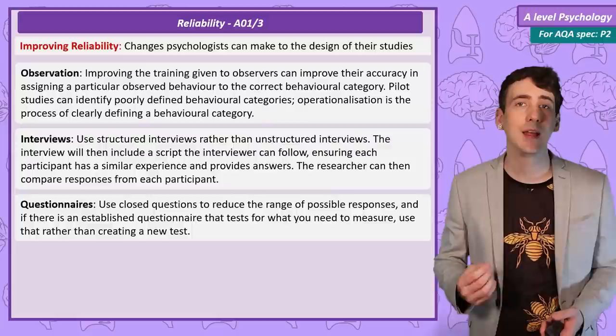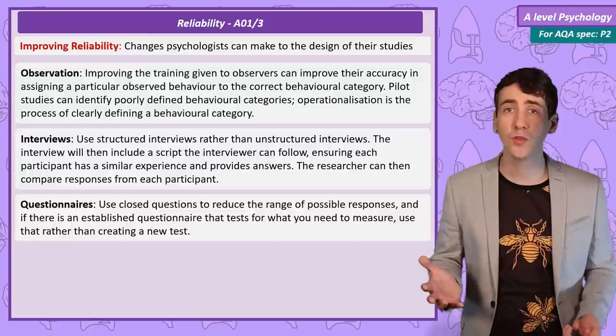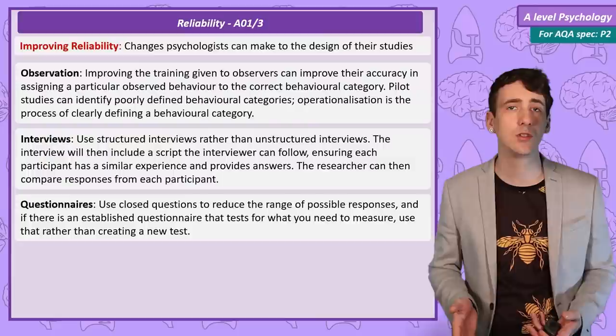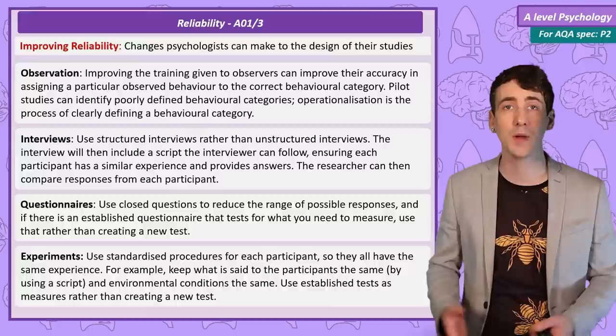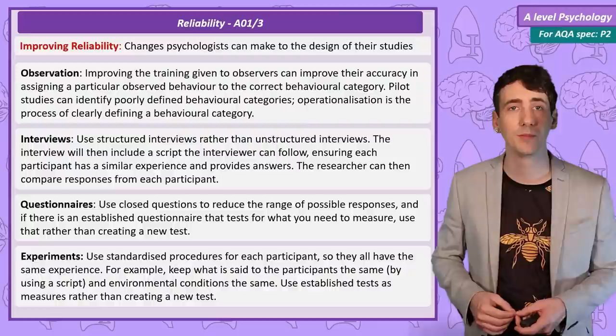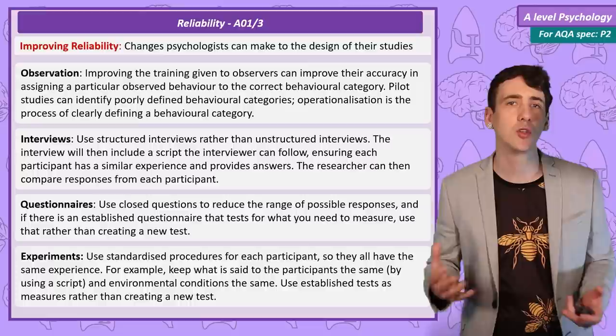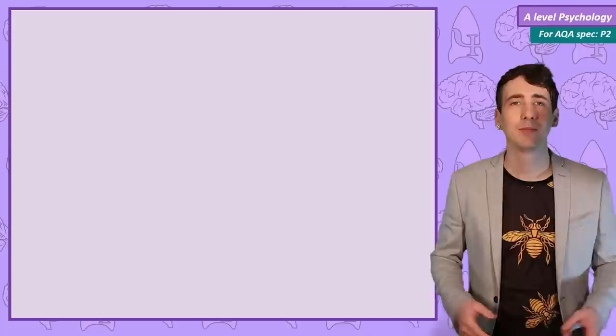Questionnaires can use closed questions to reduce the likelihood of confusion in the response required. And if the questionnaire is measuring a factor that has an established test, use that instead of creating a new questionnaire. One example is researchers often use BEM's Sex Role Inventory, or BSRI, when assessing gender identity, rather than just creating their own questionnaire. Experiments should use a clear standardised procedure so every participant gets the exact same experience. The researchers should be aware of environmental conditions, keeping them constant. And similarly with questionnaires, if there is an established experimental procedure to measure say short term memory, use that rather than creating a new task.